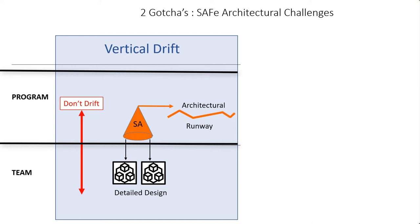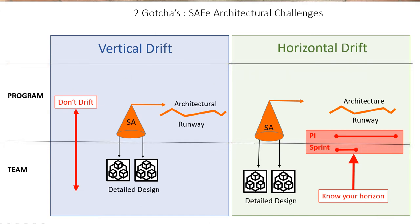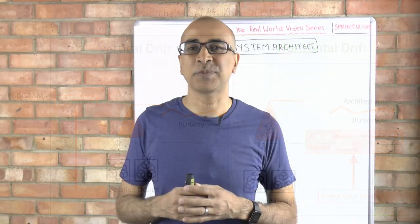The other gotcha is what I call horizontal drift. That's where the system architect is working at the PI level, but the detailed designers are not just looking at the work needed for the current sprint — they're looking far ahead as well. The distinction between the high-level architectural runway and the detailed design is lost, and designers may be trying to design things too far ahead. So be careful of vertical drift, where the system architect goes too deep, and horizontal drift, where team-level people go into too much detail across multiple sprints in advance.